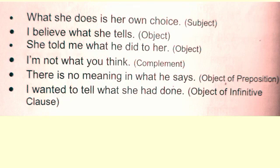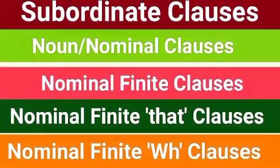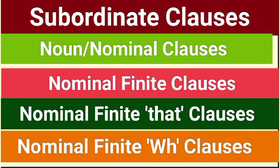Like nominal finite that-clauses and nominal finite WH-clauses, we also have nominal non-finite clauses. But as this video is getting longer, we will conclude with nominal finite clauses and talk about nominal non-finite clauses in the next video. There are two types of nominal finite clauses: that-clauses, introduced with 'that,' and WH-clauses, introduced with a WH word or 'if.' If you liked this video, please hit the like button, share it with your friends, and subscribe if you are new to this channel. Thank you very much for watching.